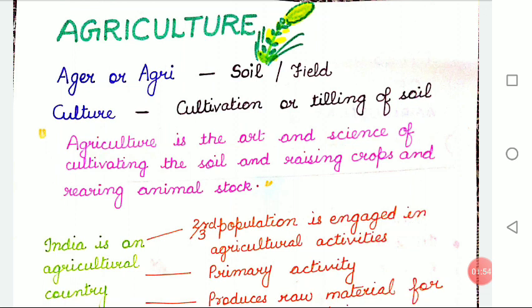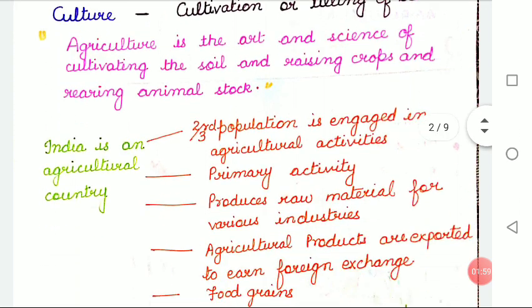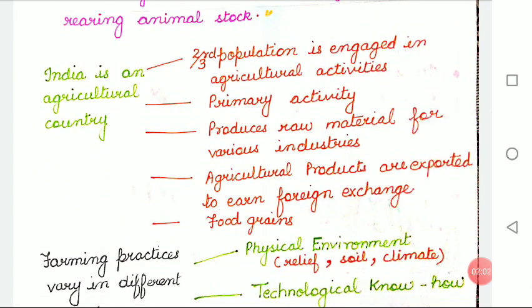India is also an agricultural country. Why do we call India an agricultural country? The reason is two-thirds of its population is engaged in agricultural activities which provide livelihood. Agriculture is a primary activity and produces most of the food and food grains that we consume. It produces raw material for various industries, for example, cotton textile and sugar industry. Some agricultural products like tea, coffee and spices are exported and earn foreign exchange.